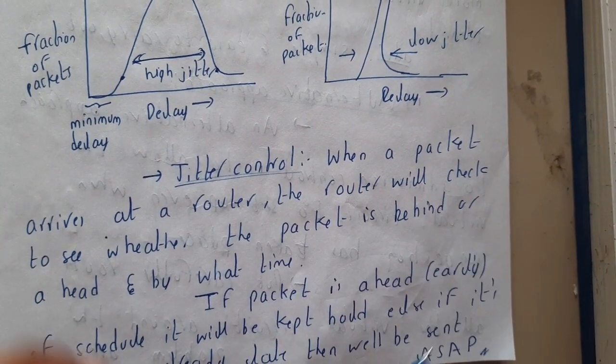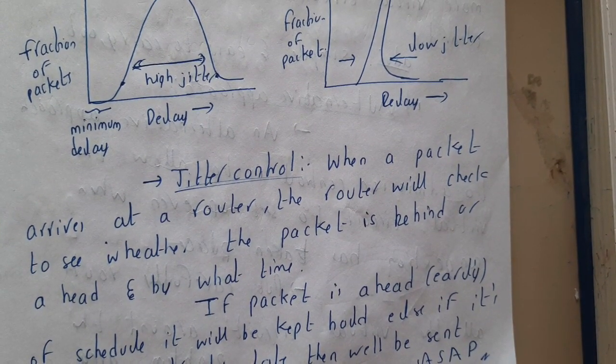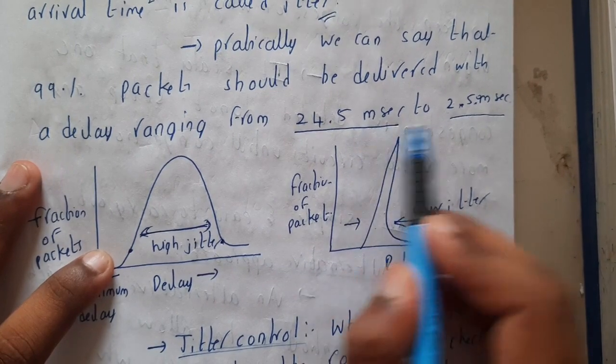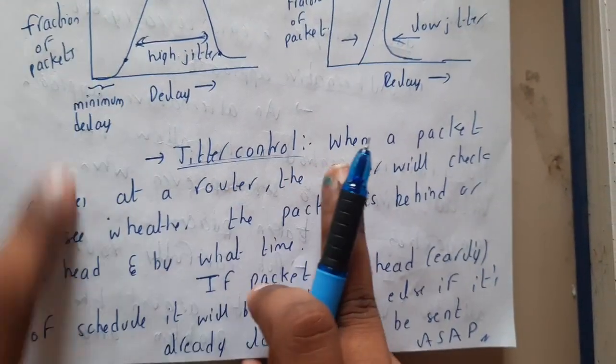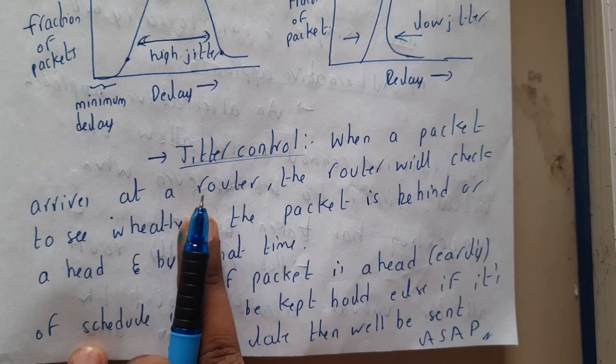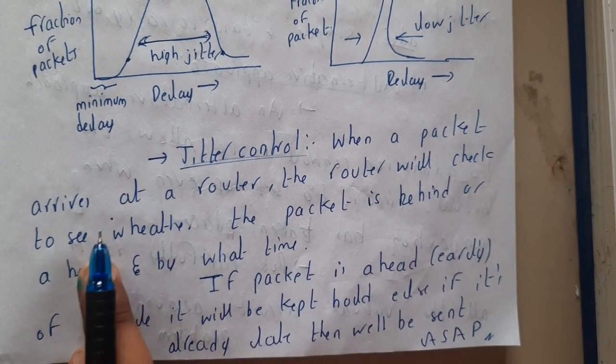So basically, jitter control is nothing but you are controlling this jitter to be less or in between these things at max. So when a packet arrives at a router, the router will check to see whether the packet is behind or ahead.